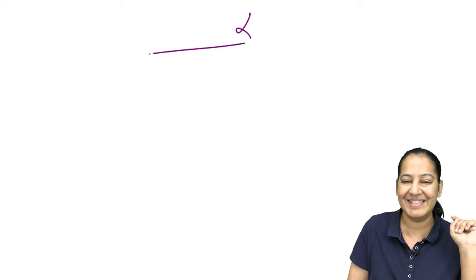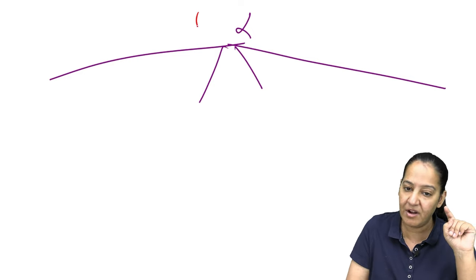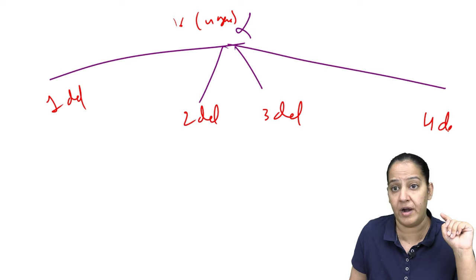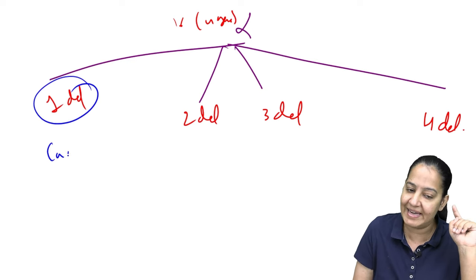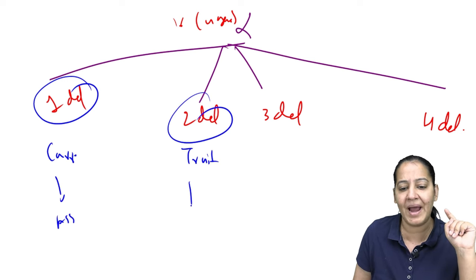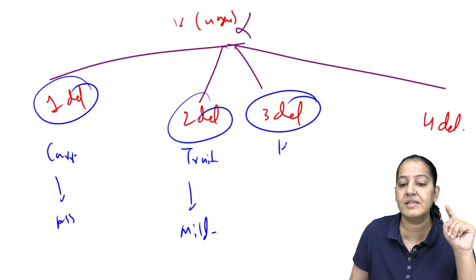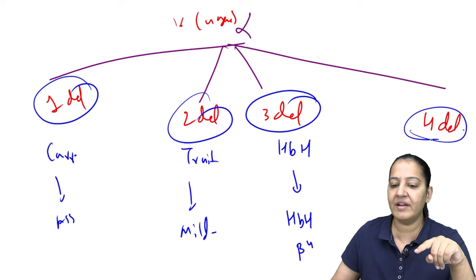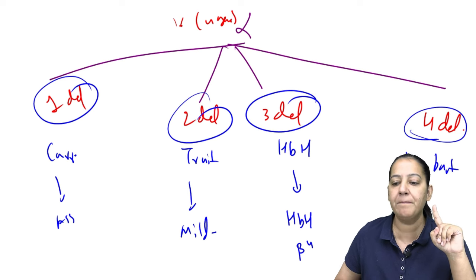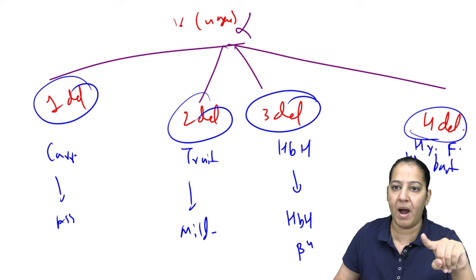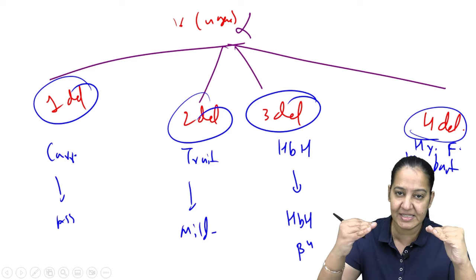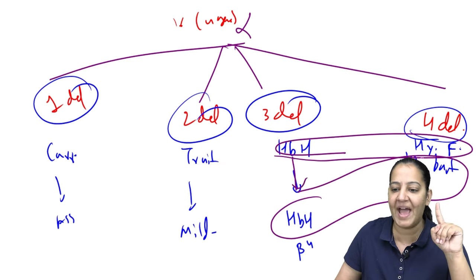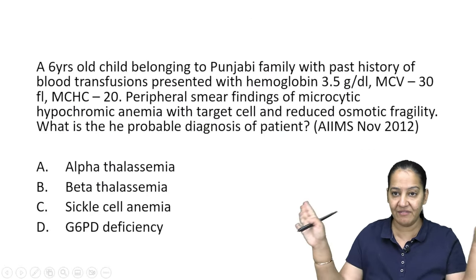Summary of alpha thalassemia: 4 types based on gene deletions from chromosome 16. One deleted = carrier (asymptomatic). Two deleted = trait (mild anemia). Three deleted = hemoglobin H disease — hemoglobin H is a beta tetramer (β4). Four deleted = hydrops fetalis — hemoglobin Bart is formed, a gamma tetramer (γ4). Both HbH and Bart have high oxygen affinity and are abnormal hemoglobins.